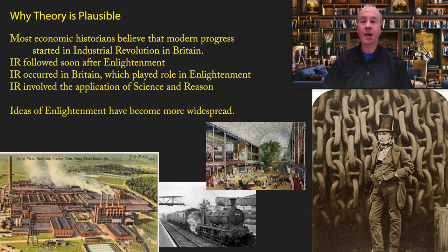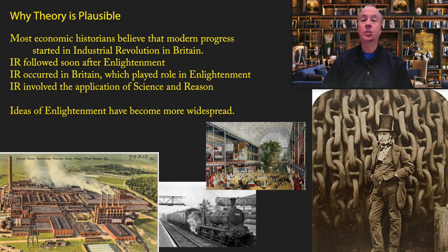So why is this theory plausible? Most economic historians believe that modern progress started in the Industrial Revolution in Britain, and both England and Scotland played an important role in the Enlightenment, so it's easy to see how it could be perceived as a cause. The Industrial Revolution also occurred either during or soon after the Enlightenment, and it clearly involved the application of science and reason to solve problems for humanity. And as nations industrialized, the ideas of the Enlightenment became more widespread. At first blush, the theory is quite plausible.